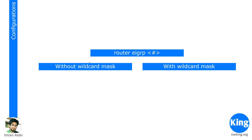Configuring EIGRP is very, very simple. Like every other routing protocol we looked at — RIP and OSPF — it's very easy. You go to global configuration mode and you say 'router EIGRP'. In other cases we did OSPF for OSPF or RIP for RIP; here it's EIGRP. So we say 'router EIGRP' and then give an autonomous system number — this number has to match across all routers that you want to be neighbors.